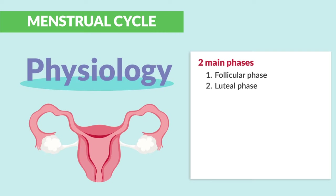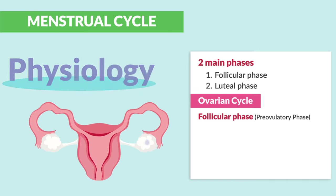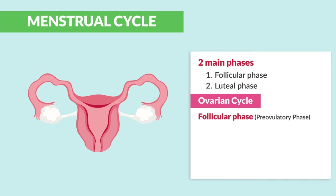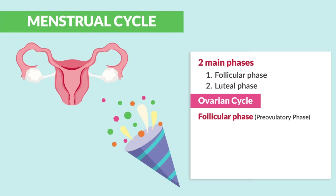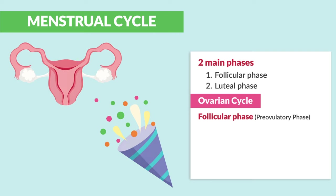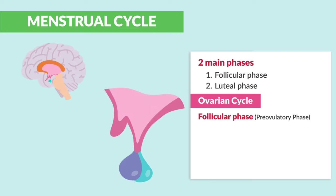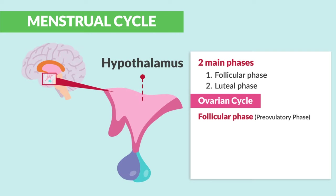Putting this all together and going a little bit deeper into physiology: during the ovarian cycle, the follicular phase — also called the pre-ovulatory phase — a number of hormones pop off like a party popper, starting with the hypothalamus and anterior pituitary.